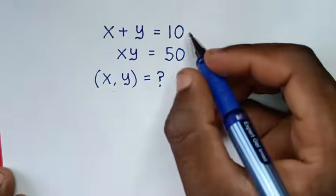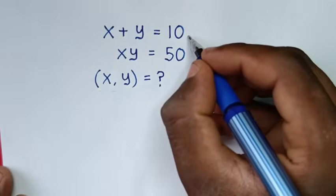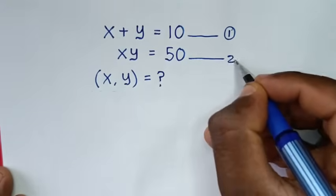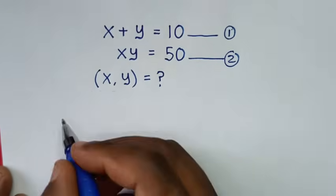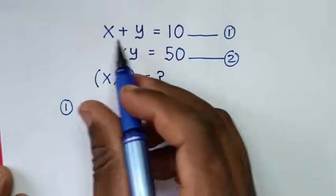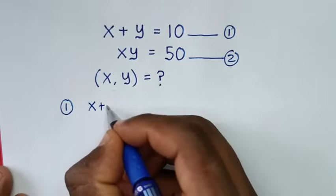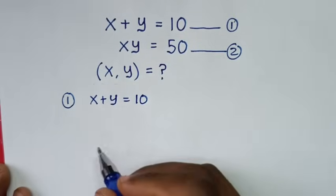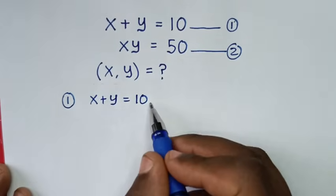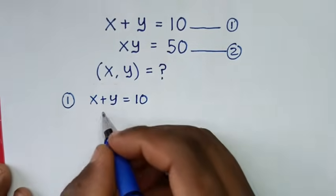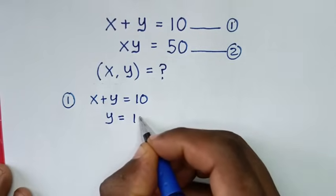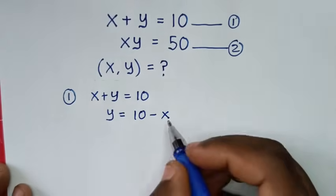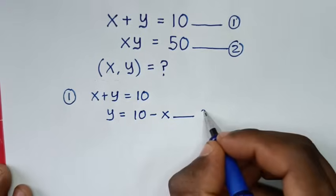Now in the first step, let's start by naming this as equation 1 and this as equation 2. Then from equation 1, which is x plus y is equal to 10, we will take x to the right side. So it will be y is equal to 10 minus x. We will call this equation 3.